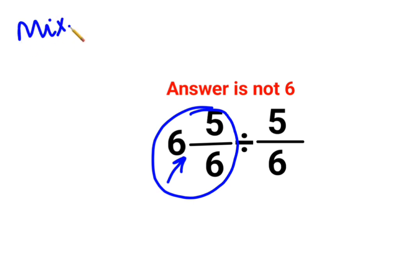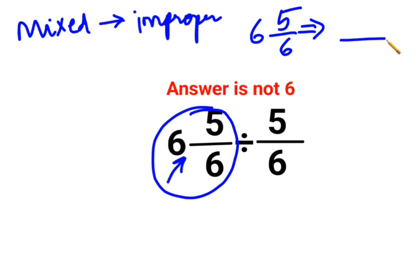In order to perform any operation on a mixed fraction, the first important step is to convert it into its improper form. Now, how do I do this? The fraction was 6 5/6.